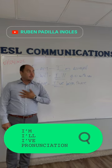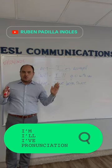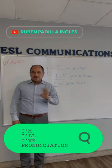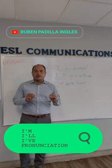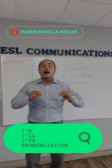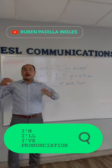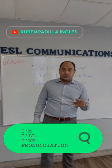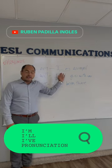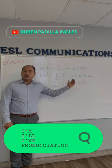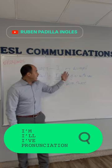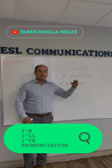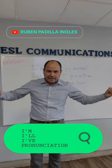Si dices separado: 'I am' — yo estoy. Pero cuando lo abrevias, no se dice 'i'm' con esa pronunciación incorrecta. Simplemente: I'm. Look: I'm hungry, I'm tired. Si está separado: 'I am hungry, I am tired.' But abbreviated: I'm hungry, I'm thirsty. My example: I'm annoyed — annoyed es enfadado.